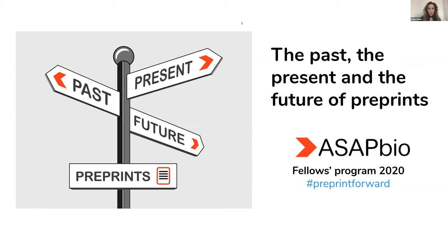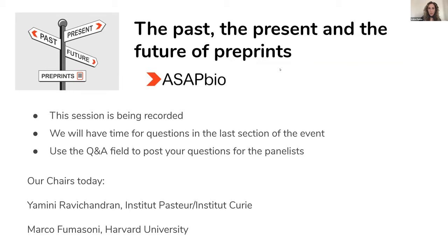To get us started, we wanted to run a few brief polls to get a sense of who is in this virtual room today. You will be seeing three brief questions: the first relates to your role — researcher, publisher, librarian, etc.; a little bit of information about how many preprints you have posted; and we're hoping you could tell us what your area of research is. I'll be launching the poll while I touch on a few housekeeping items.